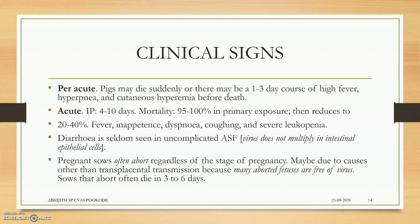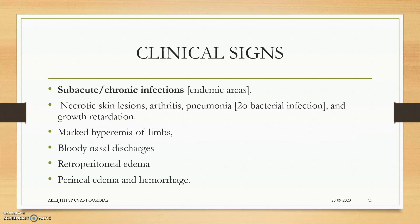The virus multiplies in neural, subcutaneous, and lymph node cells. In subacute and chronic infections, which occur in endemic areas, there will be many asymptomatic carriers constantly transmitting the disease to healthy animals.